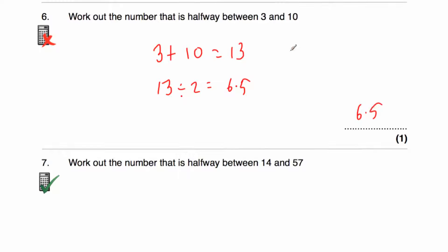Whenever you're finding the number halfway between an even number and an odd number, it will always be a 0.5 — like 6.5 and so on.